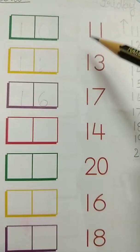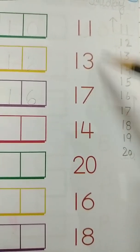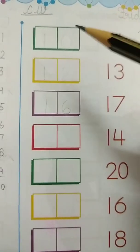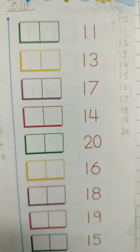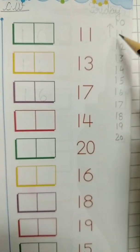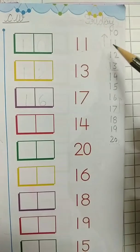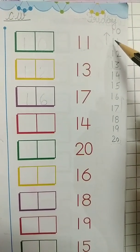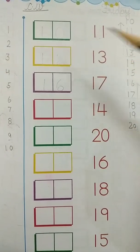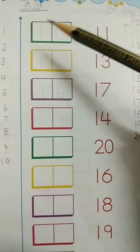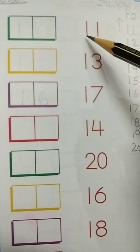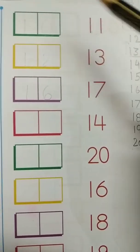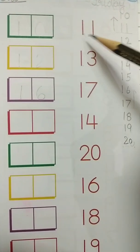See students, here are 2-digit numbers. It is 11. You all have to write what comes before 11. So students, here you all have to write what comes before with 2-digit numbers. First number is 11. So you all have to write what comes before 11.